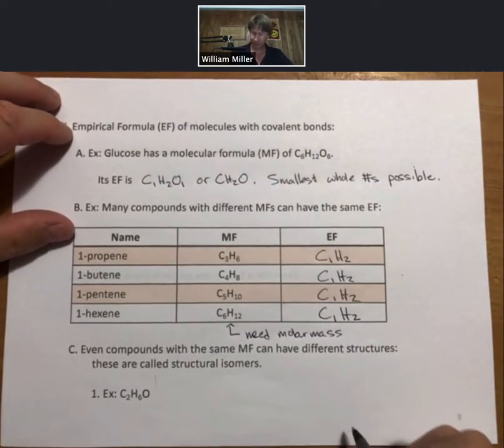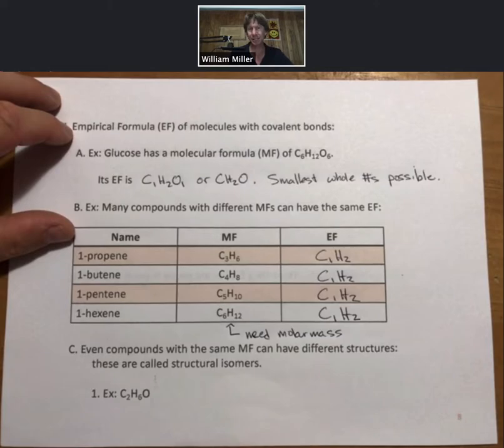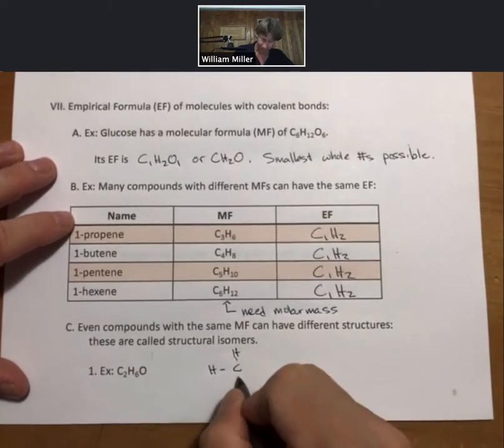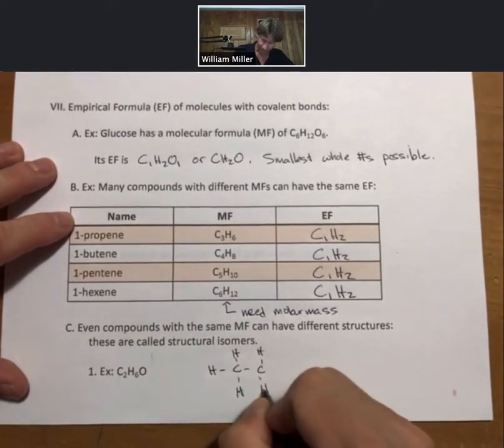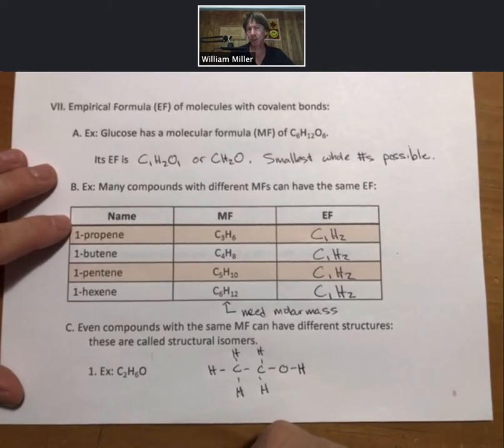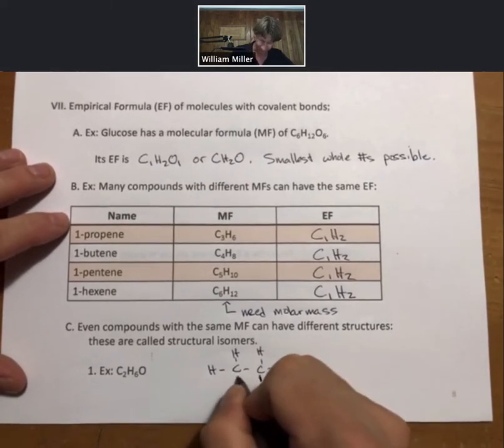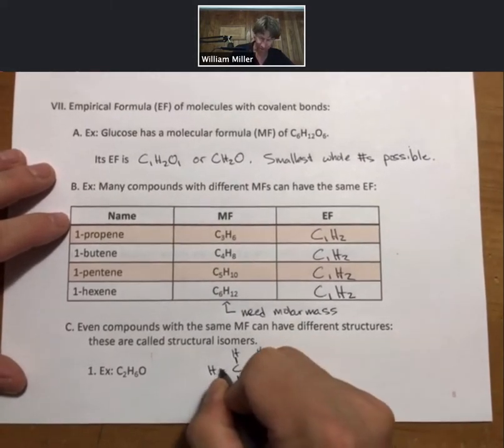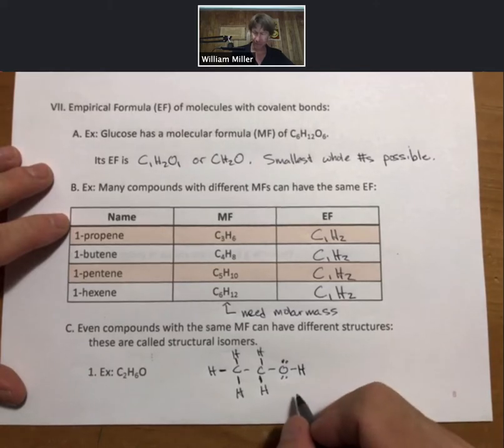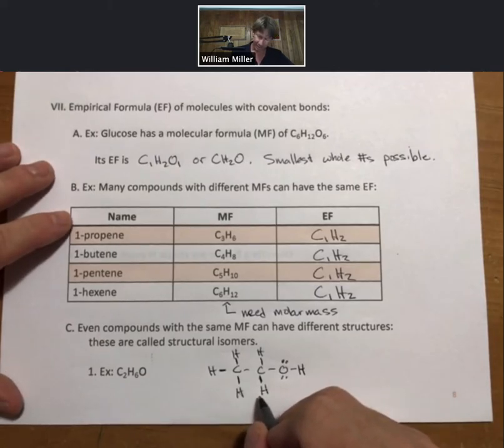Even compounds with the same molecular formula can have different structures. These are called structural isomers. If we look at the example of C2H6O, one possible structure has this type of bonding arrangement. This is what's called a Lewis structure, or more correctly it would be a Lewis structure if it had all the dots, shows all the bonds, shows all the electrons. We don't get to this until chapter nine, but just to give you an idea of how complicated it can get and where we're going.